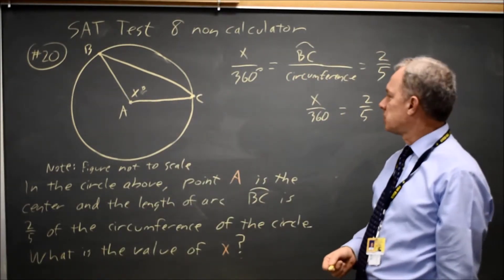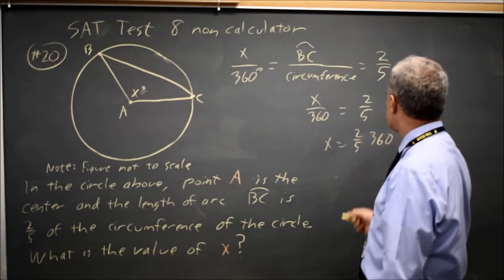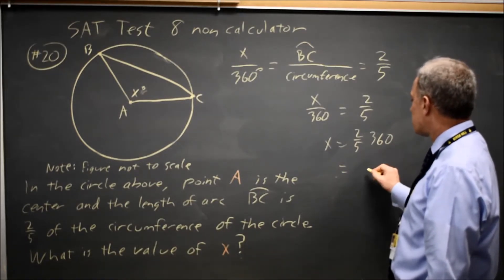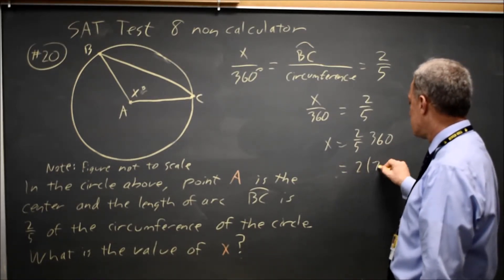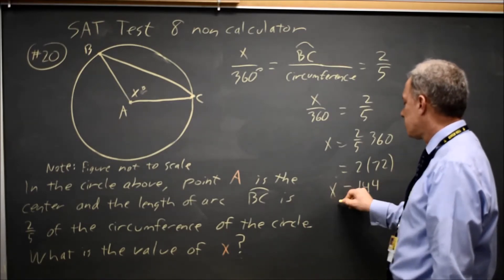The fraction of the circumference. So x equals 2 fifths of 360, which is 360 over 5 is 72. So that's 144. x equals 144.